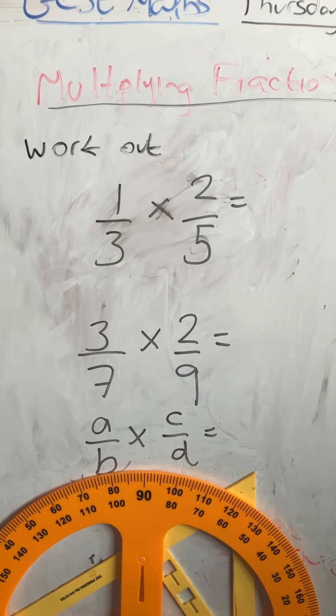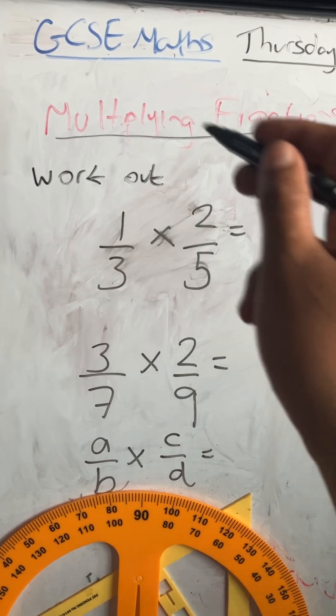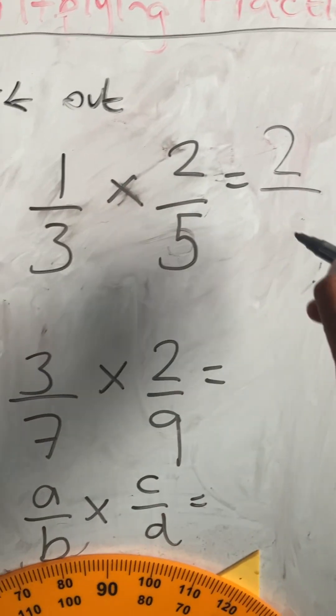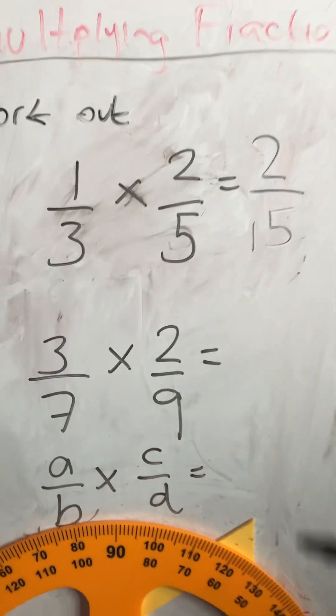Work out 1 third times 2 fifths. When we multiply fractions, we multiply the top numbers together. So 1 times 2 is 2, and 3 times 5 is 15, so we get 2 fifteenths.